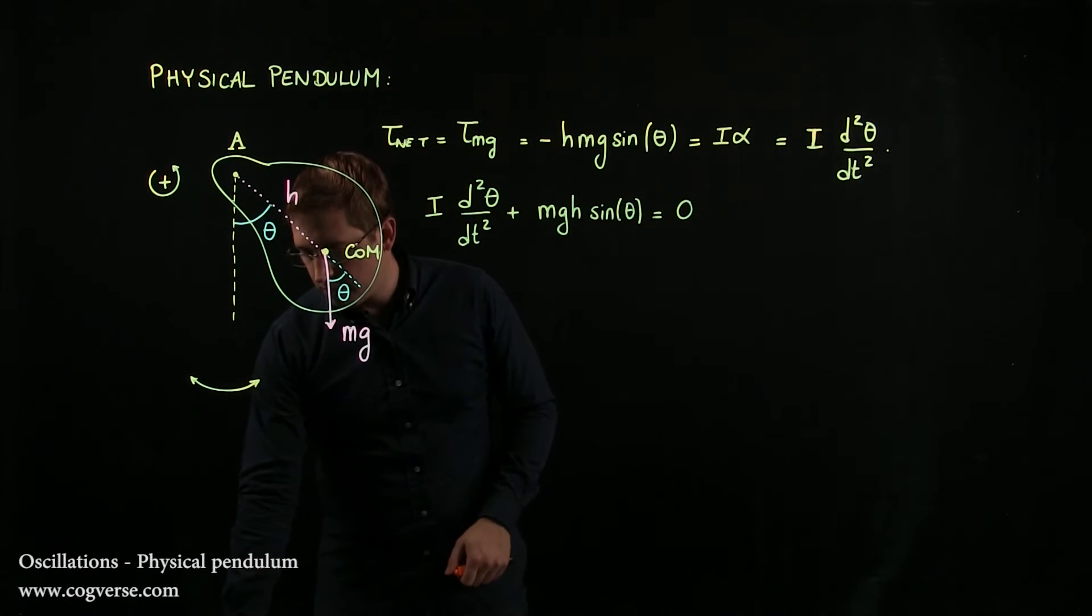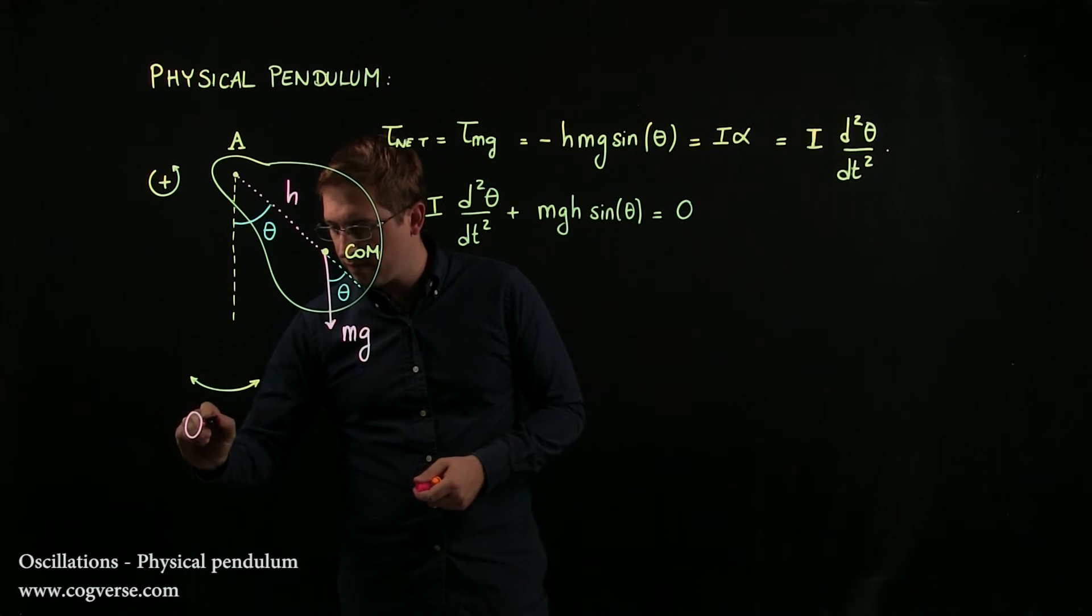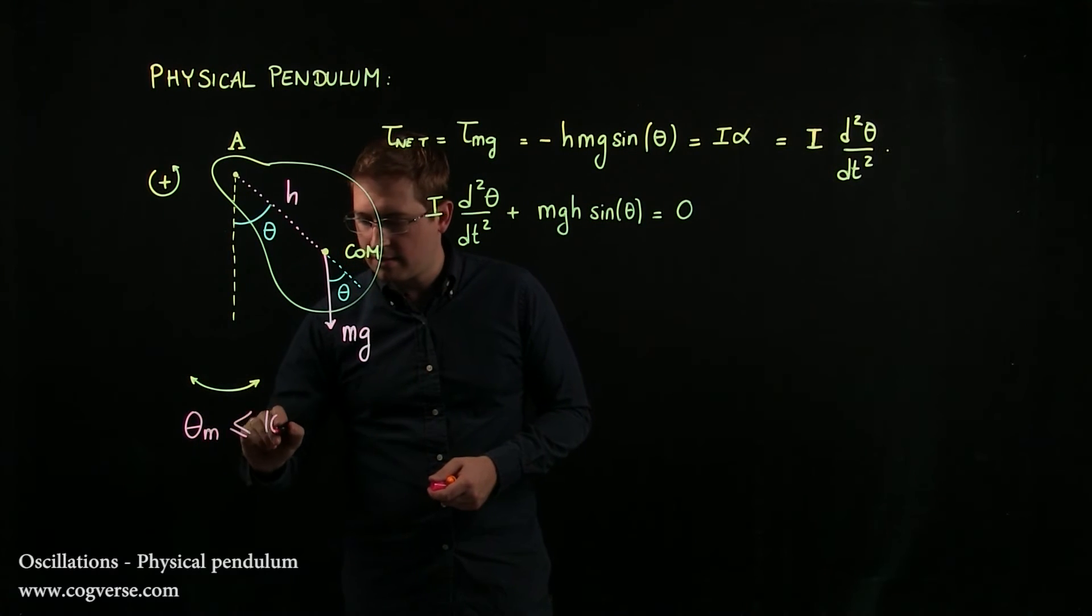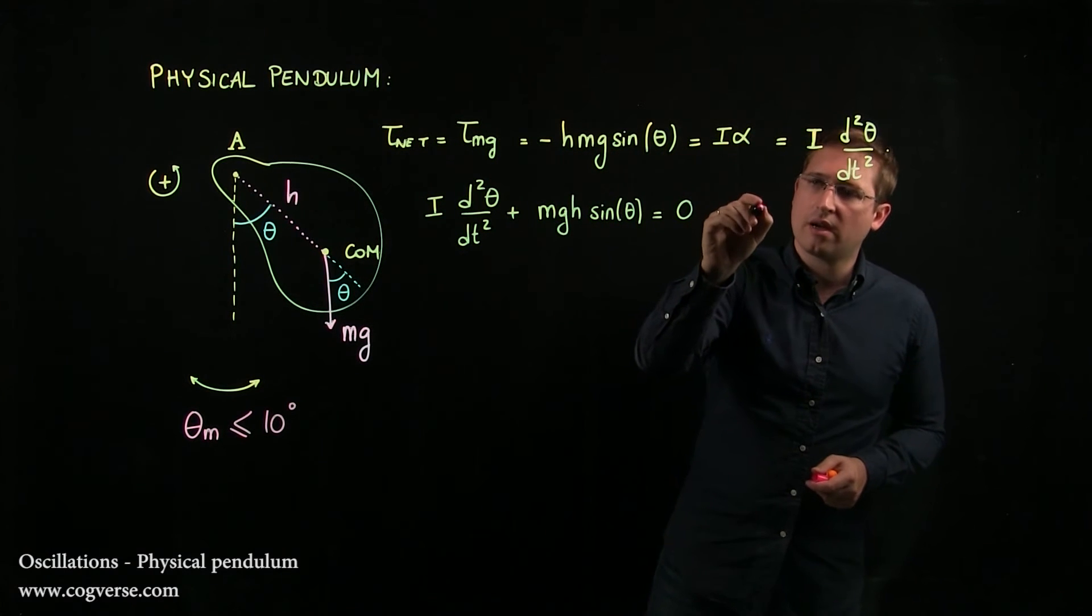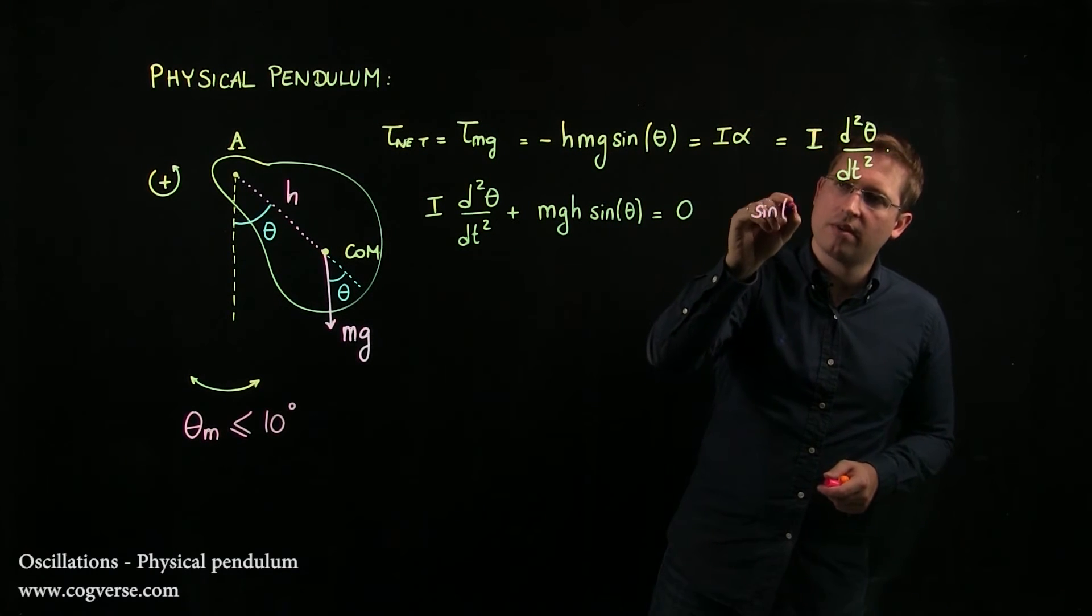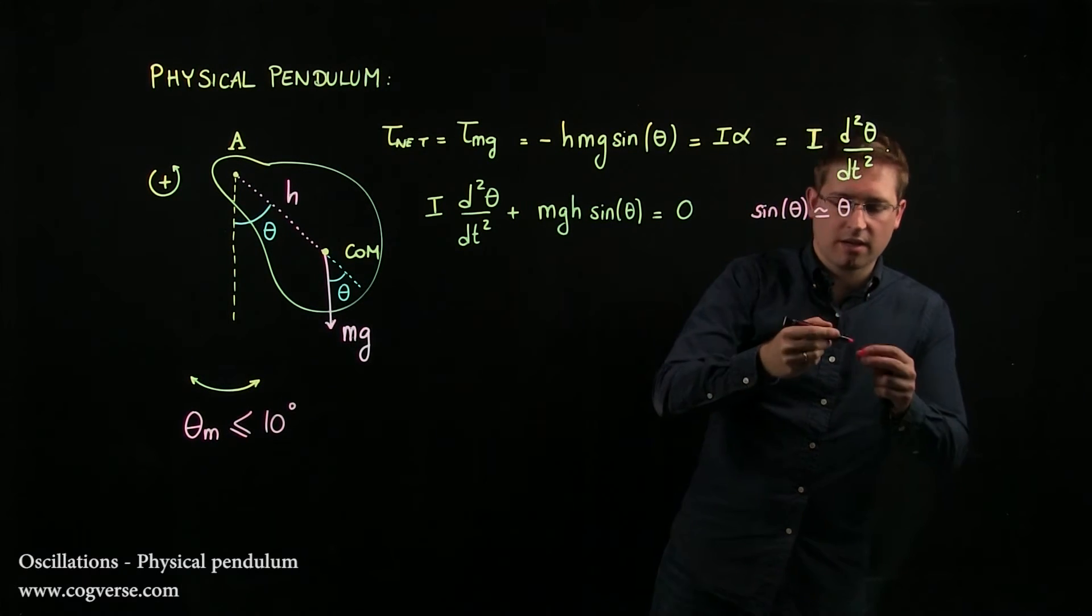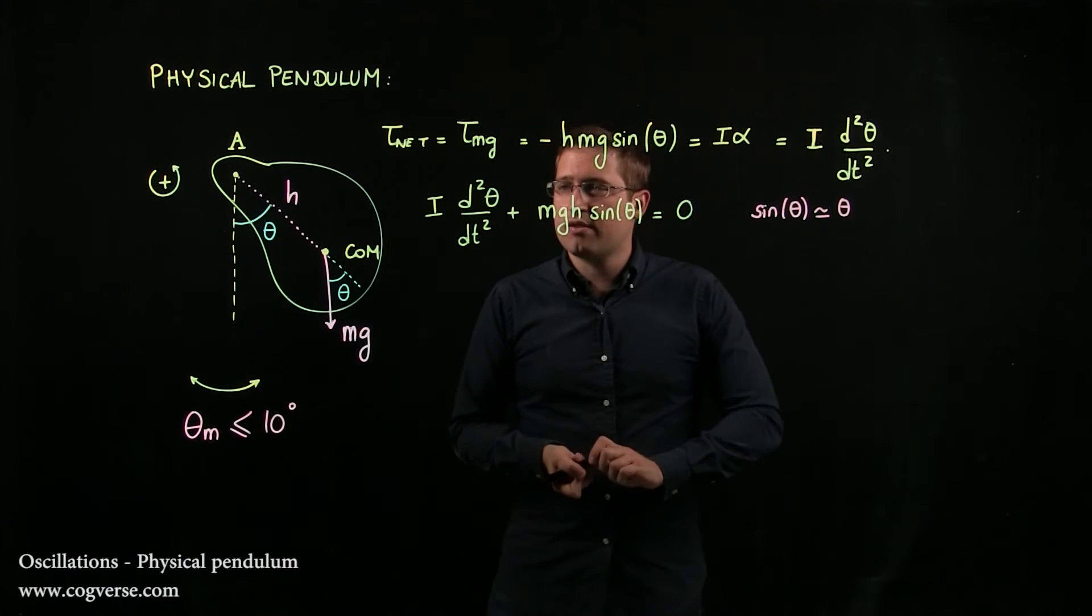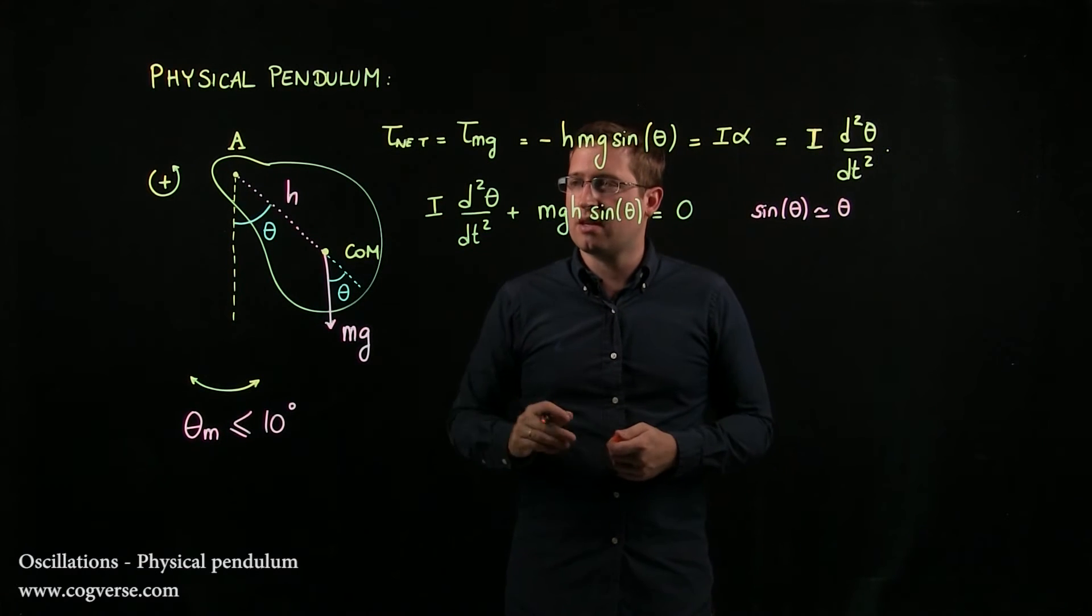So I'm going to make the same assumption. I'm going to assume that the amplitude of oscillation will be less than 10 degrees. And if I do that, I can approximate sine theta by theta rather decently. And that gives me an equation that's much better because it gets rid of sine theta.